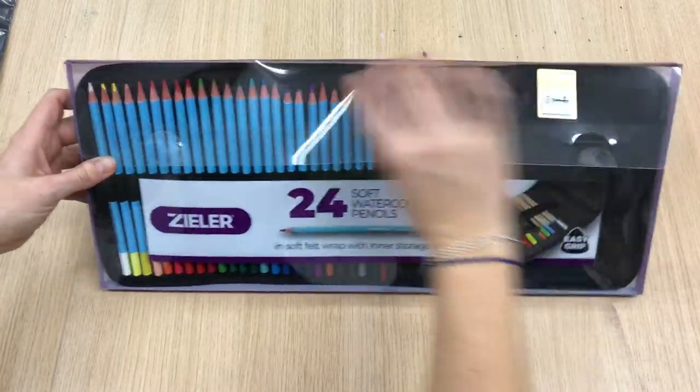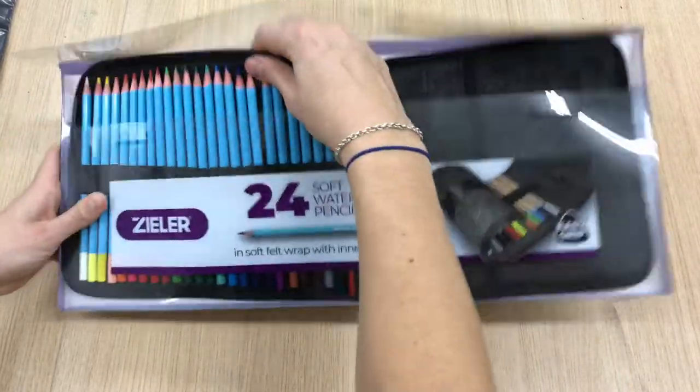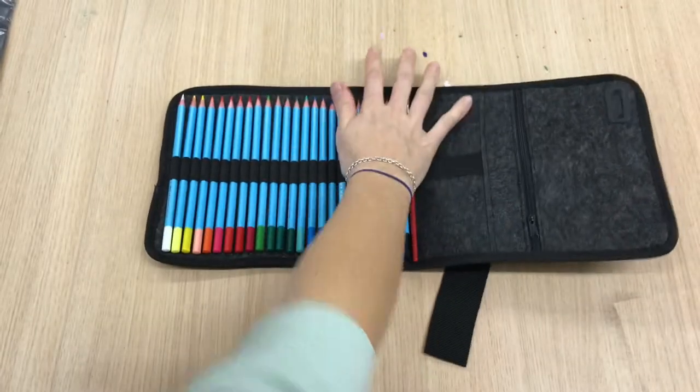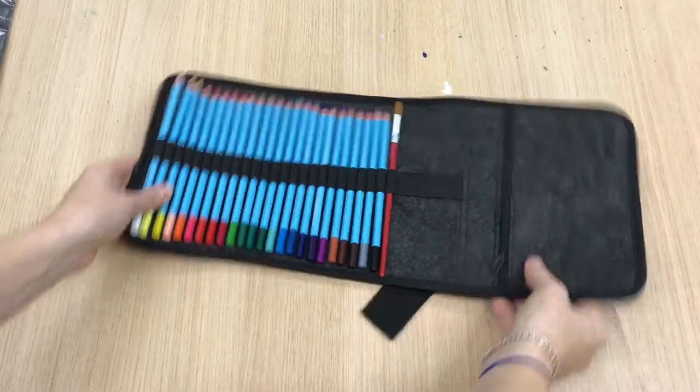This is the Zellier watercolour pencil set. It comes with 24 different coloured watercolour pencils and a number six rounded paintbrush.